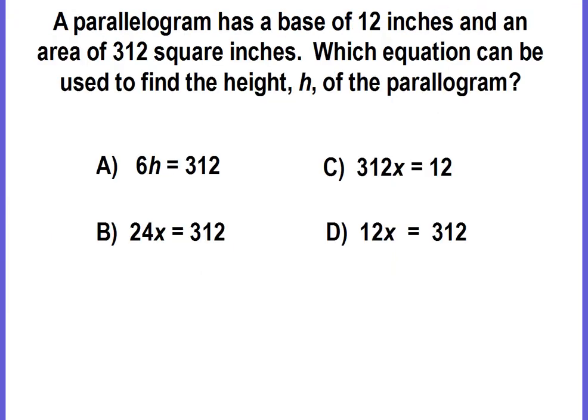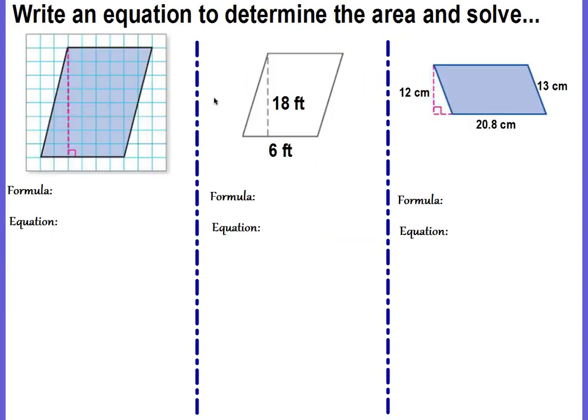Let's practice. We're going to write an equation to determine the area and solve. You have to write down your formula. The formula is A = bh, area equals base times your height. Now we're ready to substitute values into our formula. We have our parallelogram on a grid with square units.